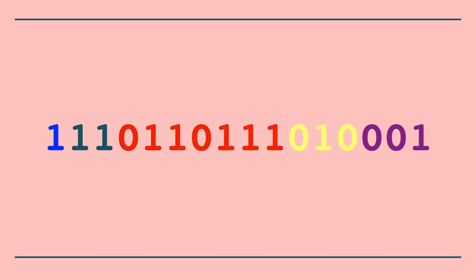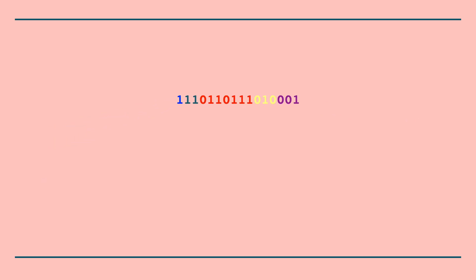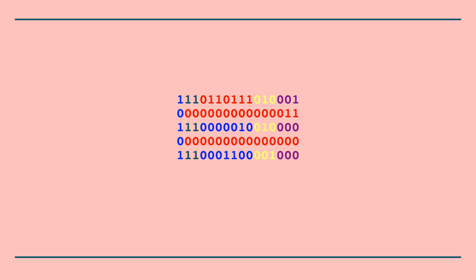A simplified model of a computer is that it reads a number and then interprets that number as a code or instruction that tells it to do something — usually something very specific. A bunch of those instructions put together make up a machine language program. One of the clever things about the HACK CPU is that in some sense it only has two instructions, called the A instruction and the C instruction. The A instruction does nothing but store a number in a special place in the computer's memory called the A register. The C instruction has a ton of options that let the CPU choose between a lot of different behaviors.